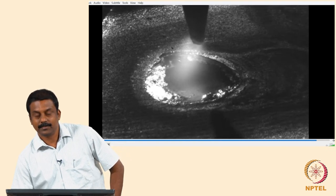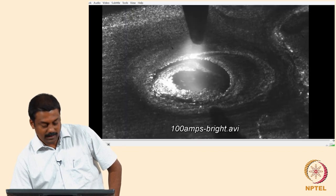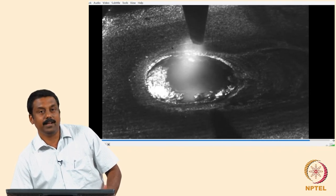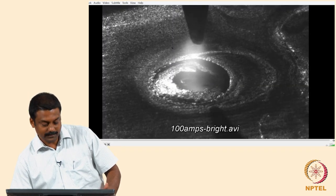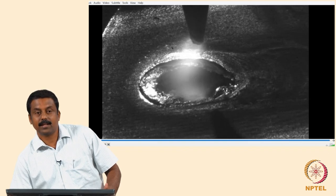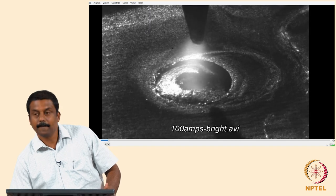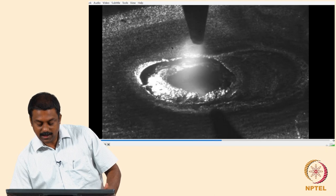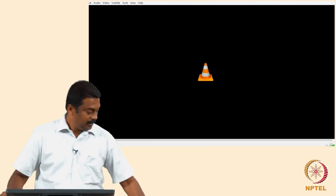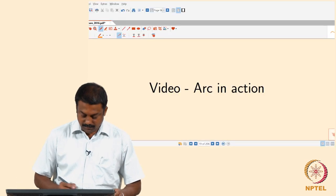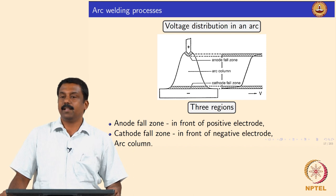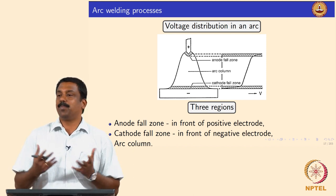All the actions — the discharge, the collisions, the generation of electrons and ions — are happening continuously at a sustained rate. Because of that the arc temperature increases and heat is transferred by conduction, convection, and radiation to the workpiece. To understand how heat is generated we need to look at the components inside the arc.